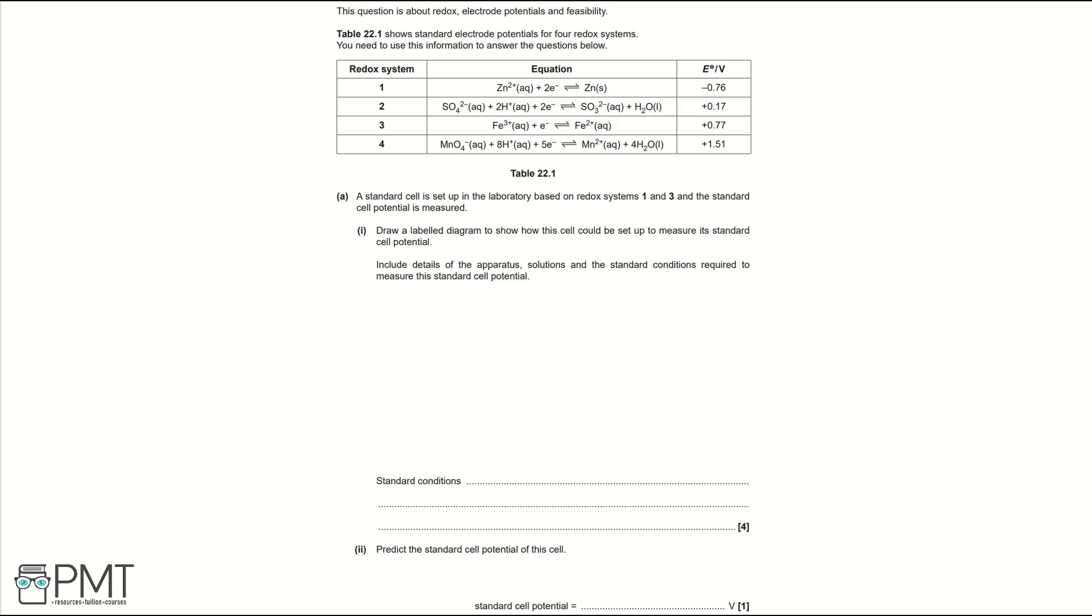If we look at the question we're using redox systems 1 and 3 and they involve zinc and iron. We would have to use a platinum electrode for the iron because the system is all aqueous whereas we can use the zinc electrode because it's solid. So we would set it up with two beakers as shown.